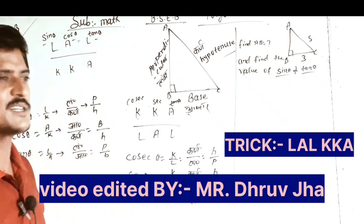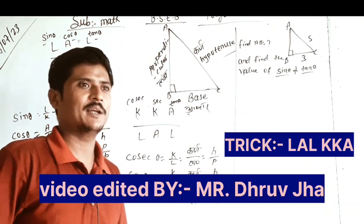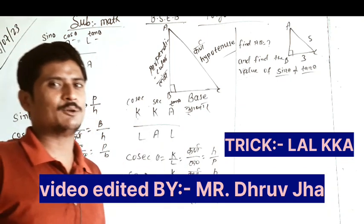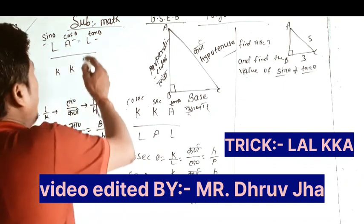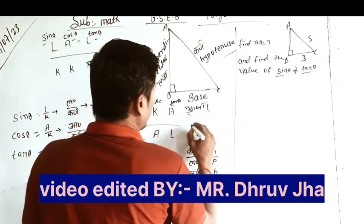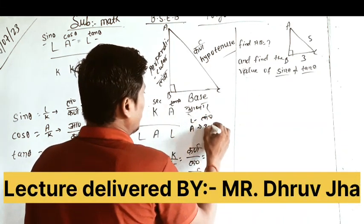This will be better for you. If you learn this, you will not forget. The trick of the formula is called Lal Kakakya. What is Lal Kakakya? First of all, L is a lambe term, A is aadhar, K is karn.